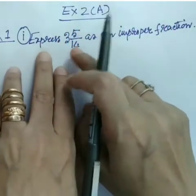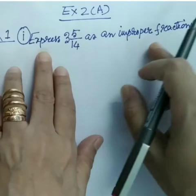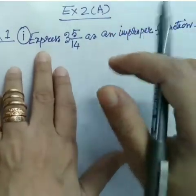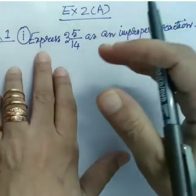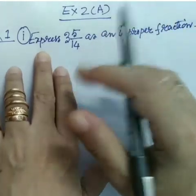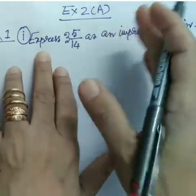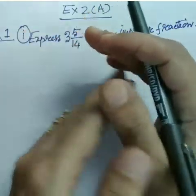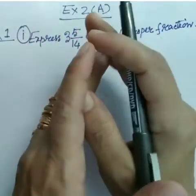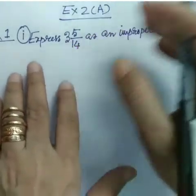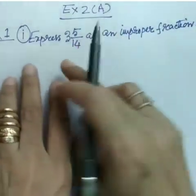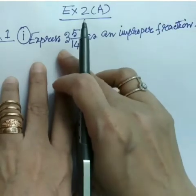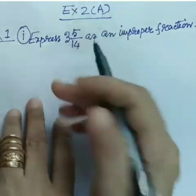Question number one, Exercise 2a: express 3 and 5/14 as an improper fraction. One thing to always remember — whenever a mixed fraction is given, after conversion it will always be an improper fraction, and conversely an improper fraction can be expressed as a mixed fraction. There is no conversion of a proper fraction into a mixed fraction and vice versa.